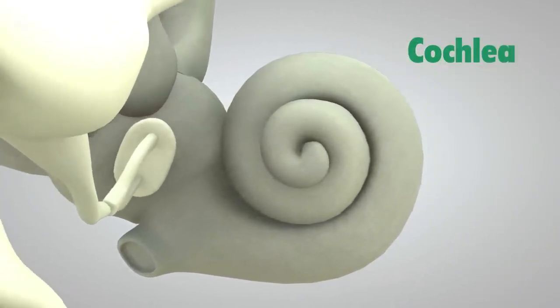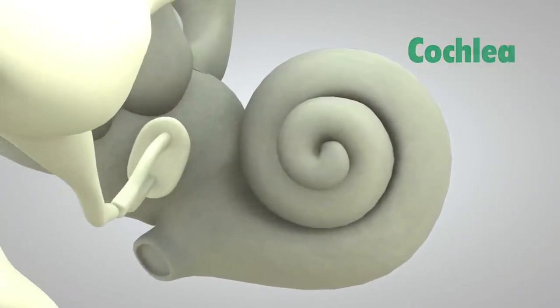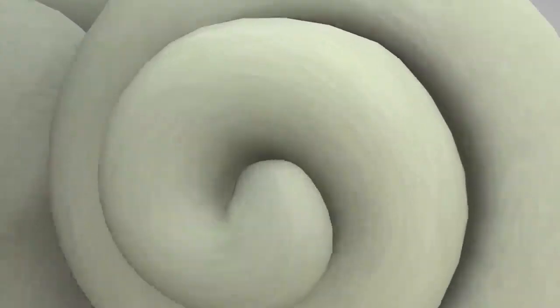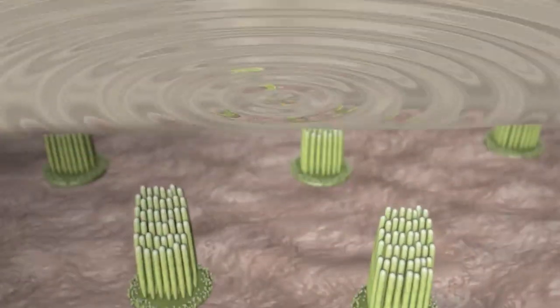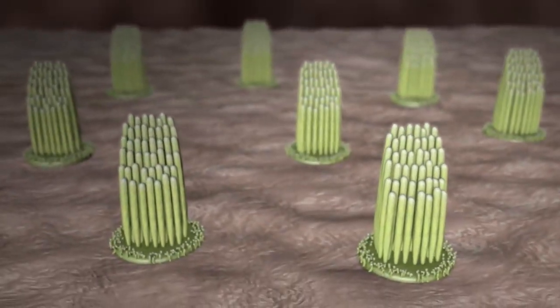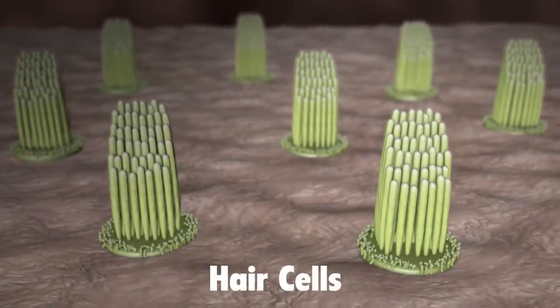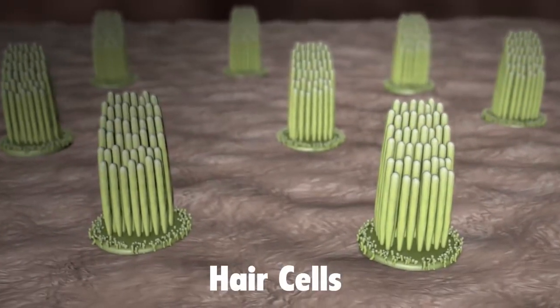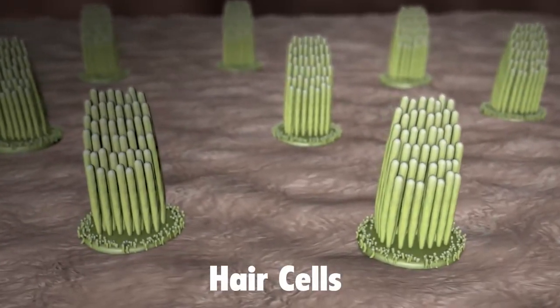The cochlea is shaped like a snail and is the size of a garden pea. It is filled with fluid, and the sound vibrations make this fluid ripple, which creates waves. Hair-like structures called stereocilia sit on top of hair cells and are grouped together as hair cell bundles inside the cochlea.